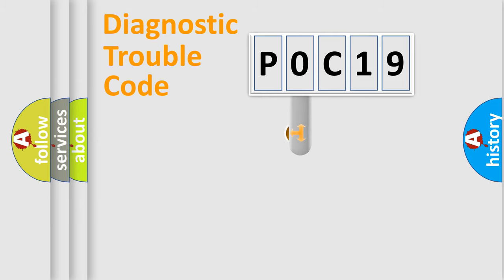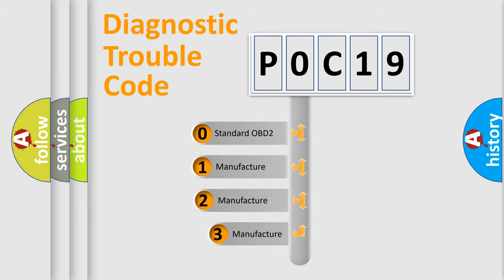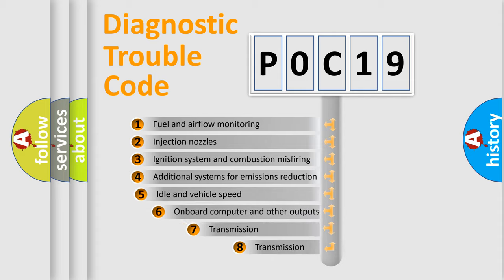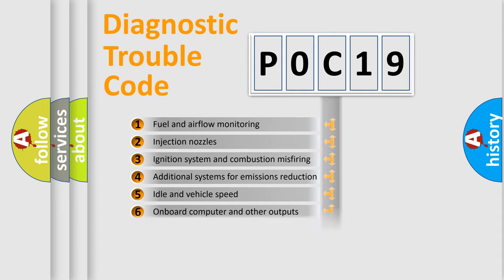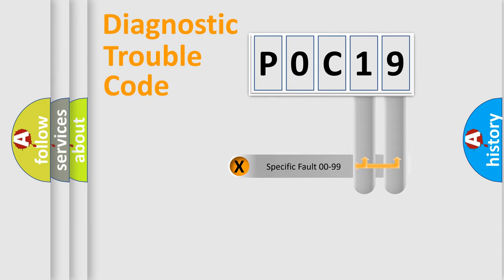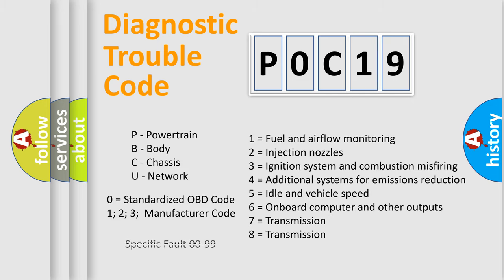This distribution is defined in the first character of the code. If the second character is expressed as zero, it is a standardized error. In the case of numbers 1, 2, or 3, it is a more manufacturer-specific expression of the car error. The third character specifies a subset of errors. The distribution shown is valid only for the standardized DTC code, and only the last two characters define the specific fault of the group. This division is valid only if the second character is expressed by the number zero.